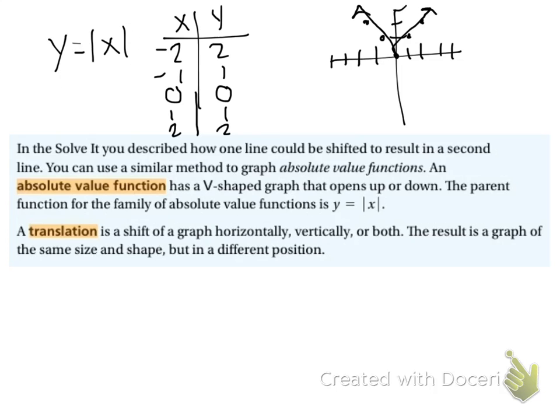But when we start putting numbers in there, adding and subtracting numbers, we can move our graph up, down, left, and right, or a combination of those. And that's called a translation. That's when you just shift your graph some direction up or down or left or right. So it's still the V, but it's just being moved from its starting point.